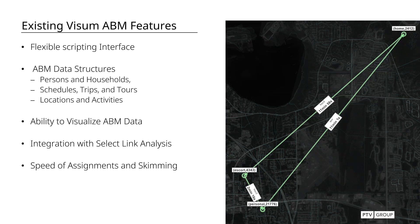All this is integrated into the Vezoom data model, so it works really well with existing tools like select link analysis with flow bundles, which is great for equity analysis and leverages rich ABM data alongside your travel demand model. Vezoom's general speed in handling assignment skimming is also very helpful, as many ABMs are quite large and complex — any time savings from faster software is a big help.